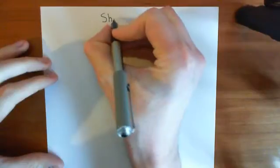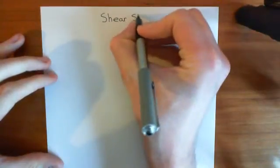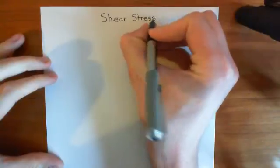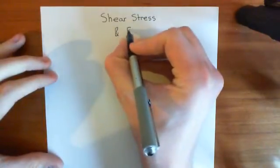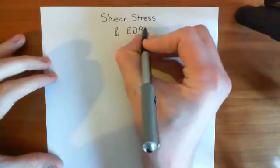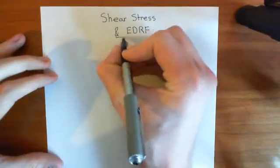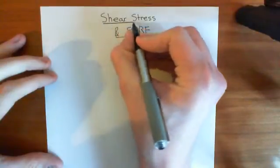Welcome to this next video in the playlist on the cardiovascular system. In this video, we're going to look at the mechanisms underlying the vasodilation which happens in response to shear stress. This video is going to be on hemodynamic shear stress and its relation to the endothelium-derived relaxation factor pathway, EDRF — endothelium-derived relaxation factor.